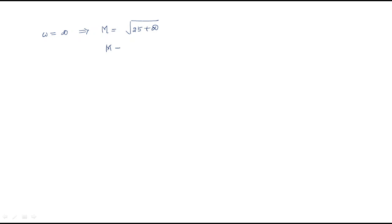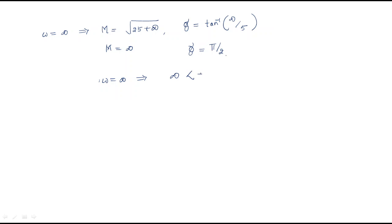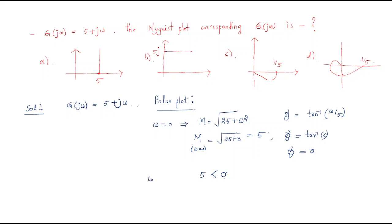At ω = ∞, the magnitude is √(25 + ∞) = ∞. The phase is tan⁻¹(∞/5) = tan⁻¹(∞) = π/2. So at ω = ∞, the magnitude is infinite and the phase is π/2.